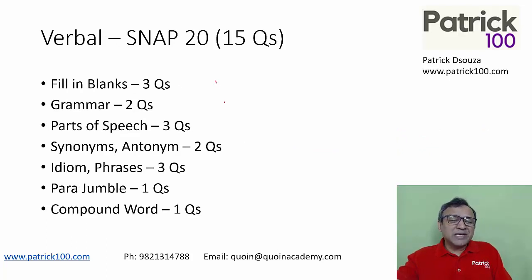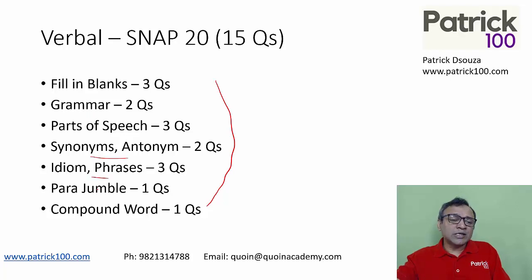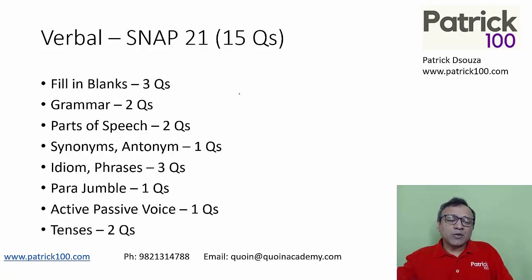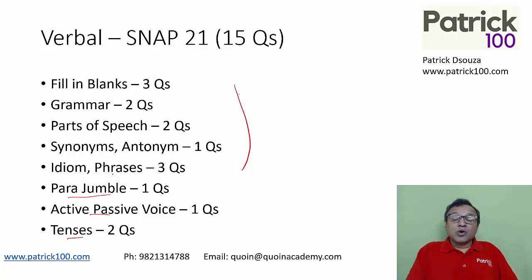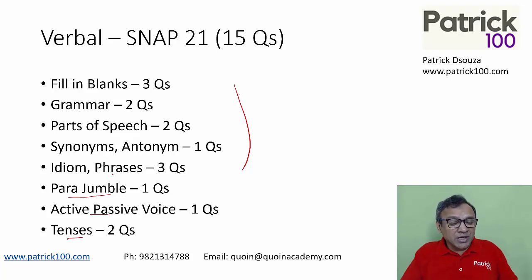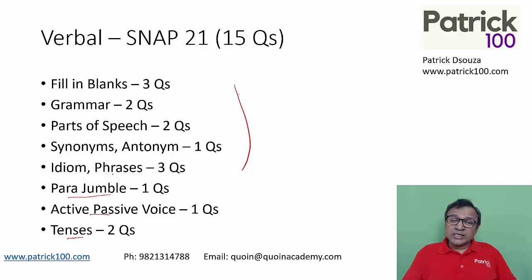Verbal, if you look at it, is more of a speed-based test — things that you can do fast: fill in the blanks, grammar, parts of speech, synonyms, antonyms, idioms. My recommendation is to definitely solve the verbal section. It's the same in SNAP 20 and SNAP 21 — active/passive voice, tenses, a couple of questions — more or less the same. One parallel question may take a little extra time, but overall these can be done quickly. My suggestion is don't leave the verbal section even if it is a weak area, because you can solve it fast. Learn to solve these 15 questions as fast as possible — maybe in six or seven minutes if possible.